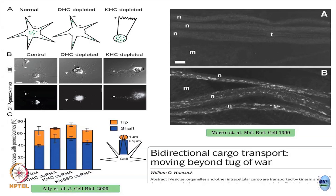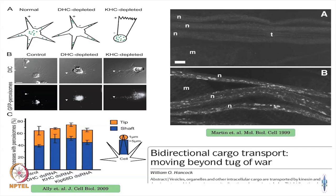If you look at the histograms — the yellow parts are cargoes towards the tip, the blue are cargoes towards the shaft — this is the control cell, this is where dyneins were inactivated, and this is where kinesins were inactivated. There is some change in the numbers, but it is not that blue has taken over in one case or yellow in the other. You maintain a similar concentration of cargo at the tip versus the shaft, irrespective of dynein or kinesin mutations.